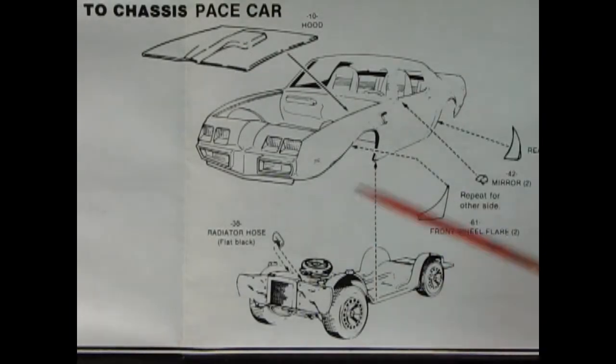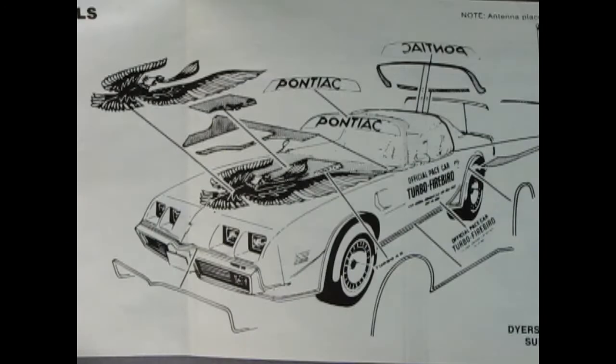So panel 14 is actually for the pace car version, which includes the hood going onto the chassis again with our radiator hose. But this time around there's sport mirrors and rear and front wheel flares that glue on the sides.